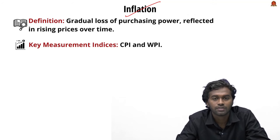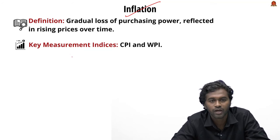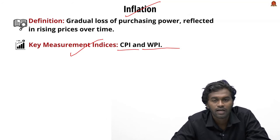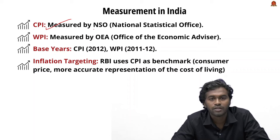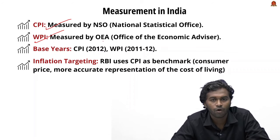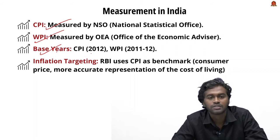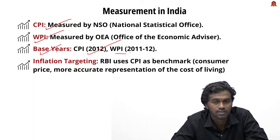What measurements do we use to understand inflation? First, the Consumer Price Index (CPI), and second, the Wholesale Price Index (WPI). CPI is measured by the National Statistical Office, while WPI is measured by the Office of Economic Advisor under the Ministry of Commerce and Industry. Both indices use similar base years — CPI uses 2012, and WPI uses 2011-12.